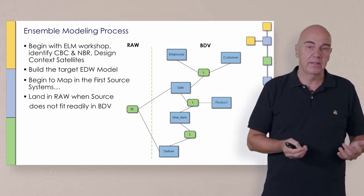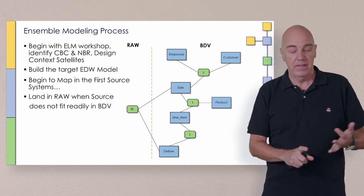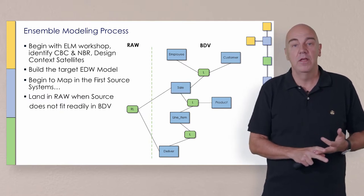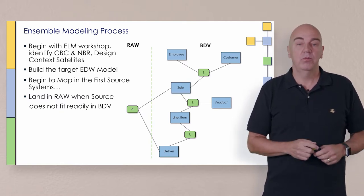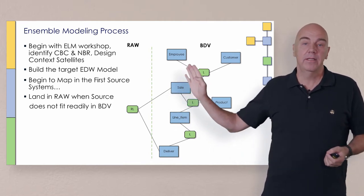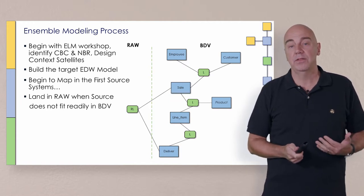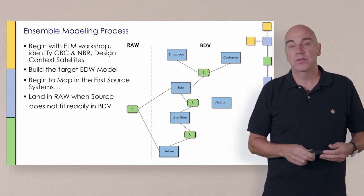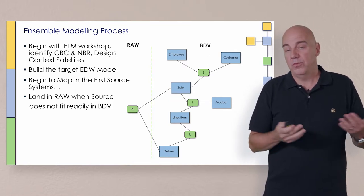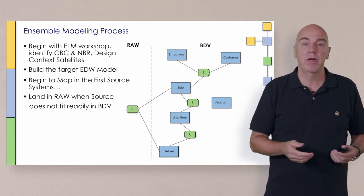But what's happened is the first source system that loaded did not have that information. The first source system said, I can tell you there were three deliveries for the sale. I just don't know which line items were on what delivery. All I know is that delivery people had to go out three times to complete the delivery of all the things, but I don't know which things were on what. So I have this link that establishes a relationship between the sale and all the different deliveries. It's not what we asked for, it's not what the business needs or wants. So what do we do with it? We have to land the data. In this case, we land it in the raw area because it doesn't really fit the business data vault or business data warehouse, and it's all we have.